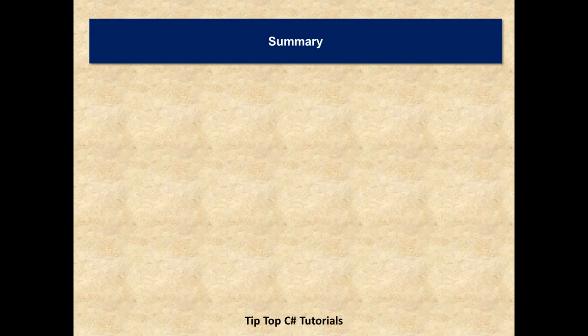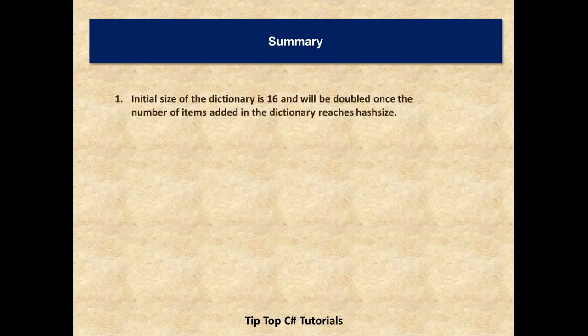I will just summarize whatever points I have covered. One is internal size of dictionary is 16 and will be doubled once the number of items added in the dictionary reaches hash size. Initially the dictionary size will be 16. As soon as the number of items that we add in the dictionary reaches 16 it will be doubled.